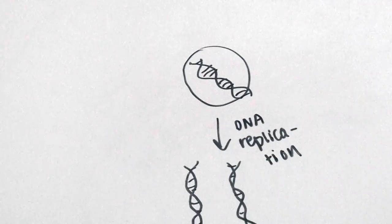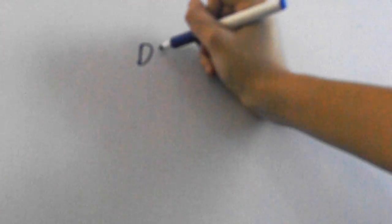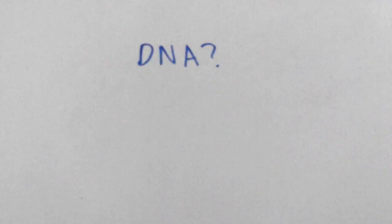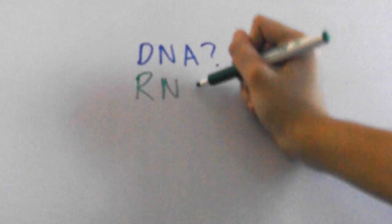Some organisms actually use RNA, which is another nucleic acid, to pass on genetic material but we won't get into that until later in the course.